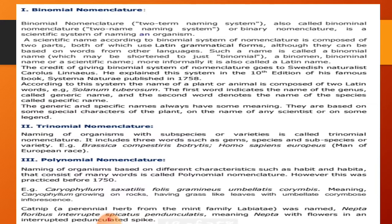According to this system, the name of a plant or animal commonly consists of two Latin words. For example, Solanum tuberosum. The first word indicates the name of the genus, called the generic name, and the second word denotes the name of the species, called the specific name. Generic names of species always have some meaning — they may be based on some characteristic of the plant, the name of a scientist, or some legend.